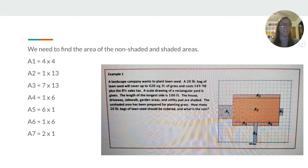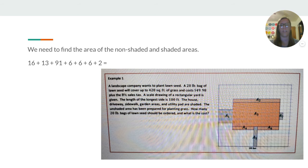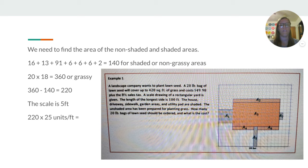So, there we have broken down each of the little sections. And we would solve for each of those and then add them together, which is 140 for shaded or non-grassy areas.